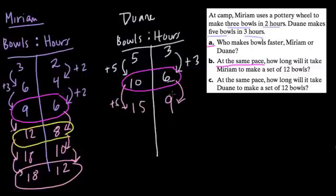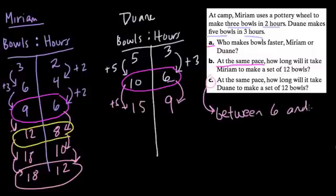So somewhere between six and nine hours, Dwayne will make twelve bowls. The question is, how do we figure out exactly what hour amount it'll be?